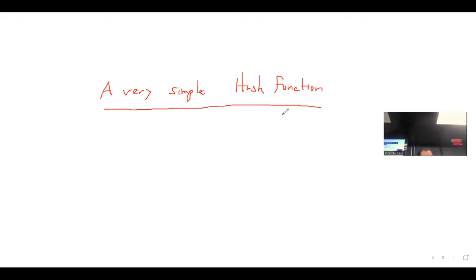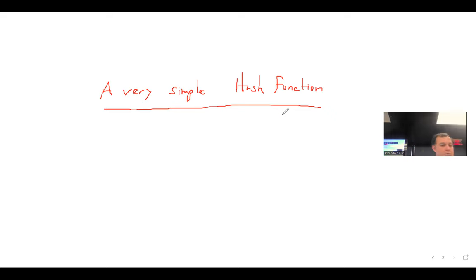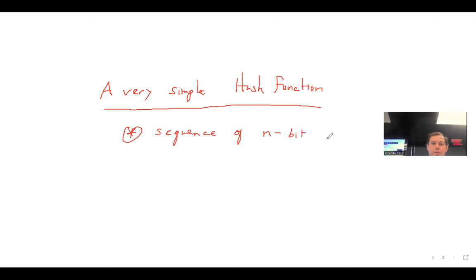Let's go over some of the description here. Practically all algorithms for computing the hash code of a message view the message as a sequence of n-bit blocks. So what does this mean? It means that it's a type of a symmetric block cipher, even for hashing. We're going to have a sequence of n-bit blocks.